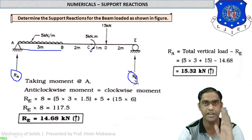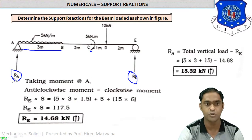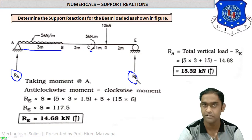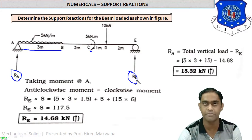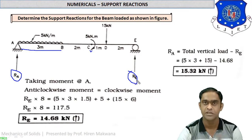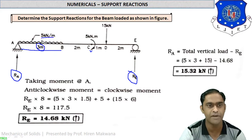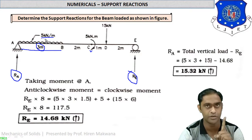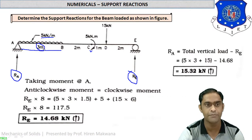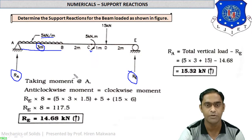When vertical, horizontal, and inclined reactions are all present, we use names VA and VE for vertical reactions. But here, since only vertical reactions are present, we name them RA and RE directly. Steps 2 and 5 are cancelled; only steps 1, 3, and 4 remain. The UDL: 5 kN/m × 3 m = 15 kN total load.